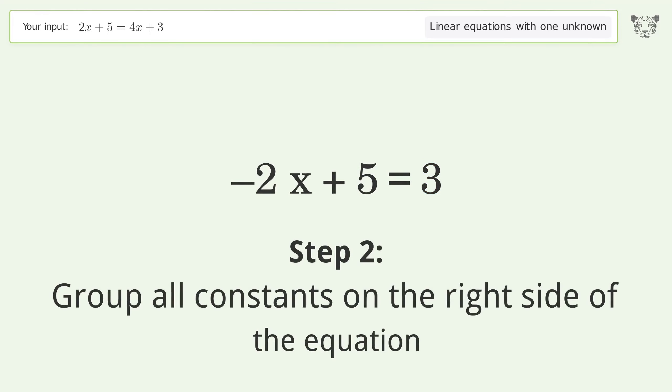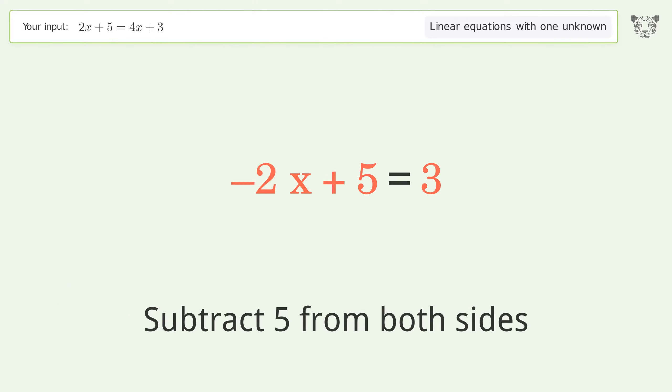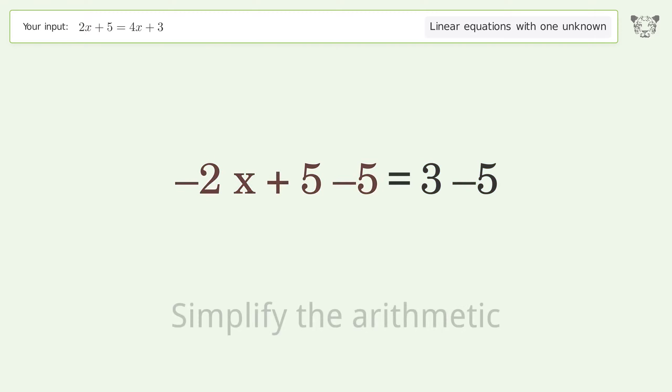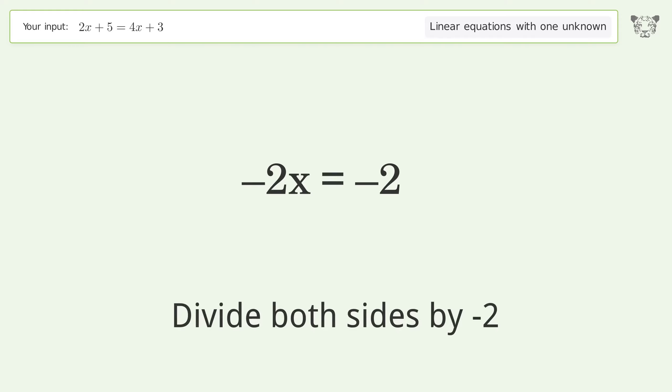Group all constants on the right side of the equation. Subtract 5 from both sides. Simplify the arithmetic. Isolate the x. Divide both sides by negative 2.